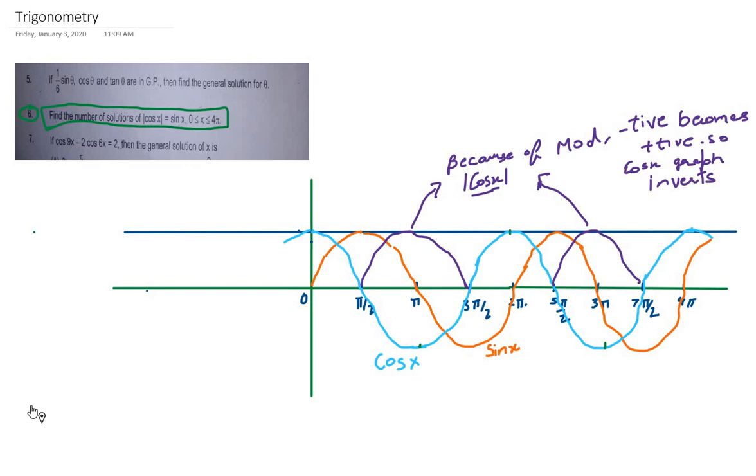It goes from 0 to π/2 increasing, then decreasing up to 3π/2, then increasing up to 5π/2, then decreasing up to 7π/2, and increasing up to 4π. We should be very well aware of sin x and cos x functions.